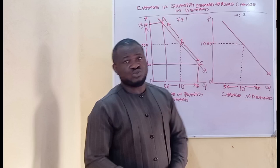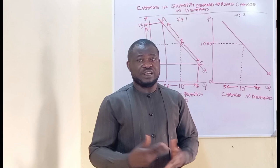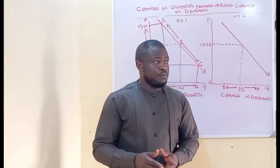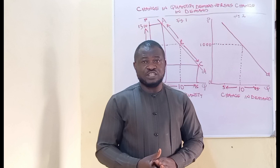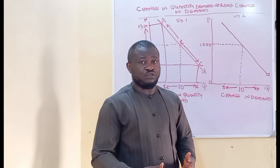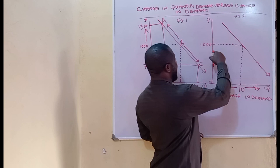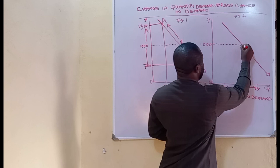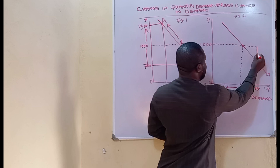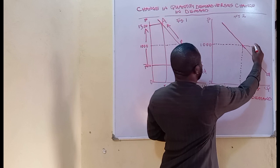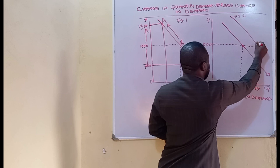Or if all of a sudden Mr. John develops greater tastes and preferences for the consumption of ever water — perhaps there were other brands of water that Mr. John was combining with ever water, but now he no longer wishes to consume those brands and has grown a greater taste for ever water. Hence, we now have a situation whereby at the original price of 1,000 Naira per carton, Mr. John can afford to consume a greater quantity — 15 cartons of ever water — resulting in a rightward shift in the demand curve.